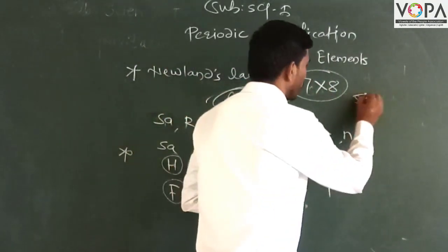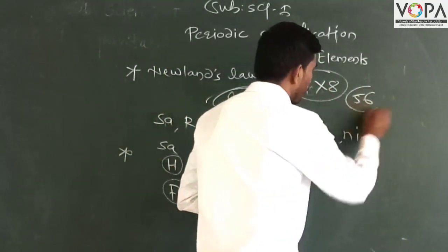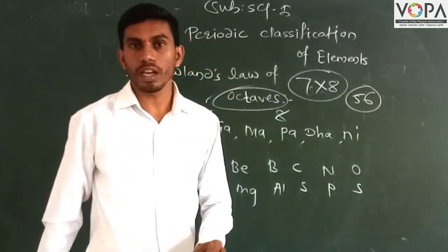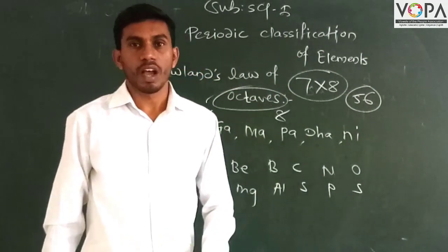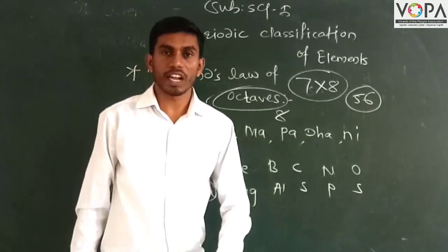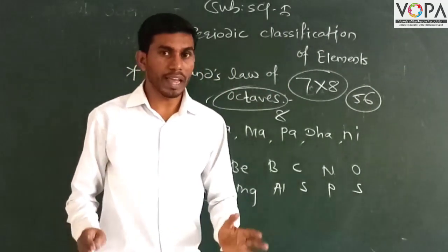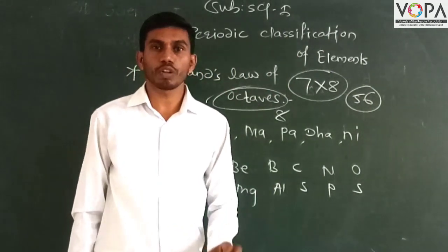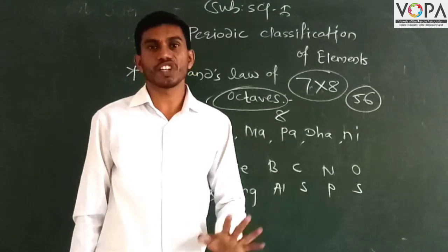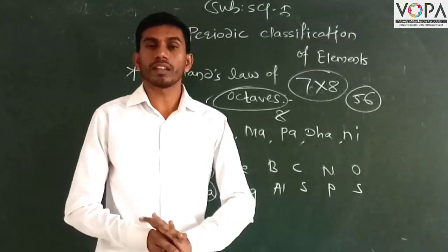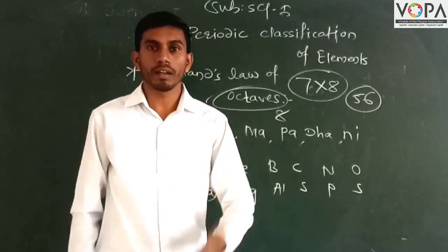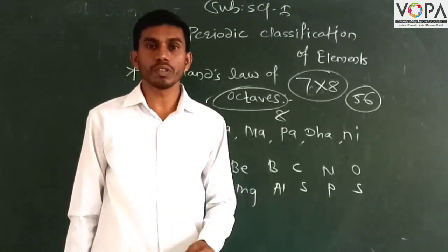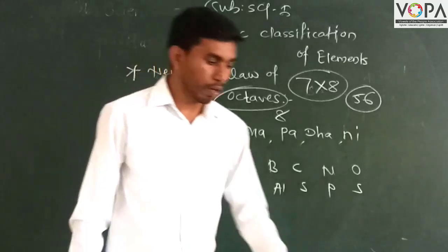What elements would you give? 56 elements. The 56 elements would be arranged properly. It depends on the laws — what we need to do with many languages — periodic laws.